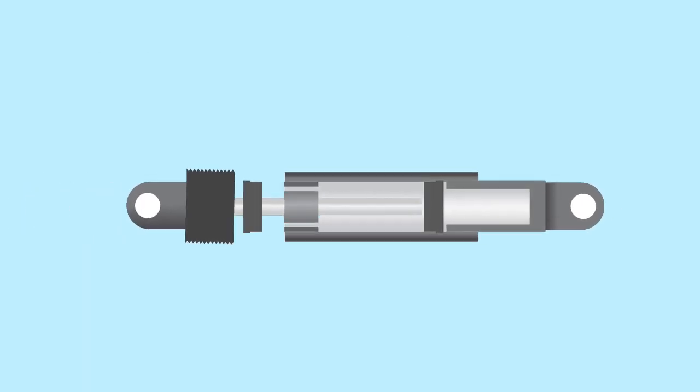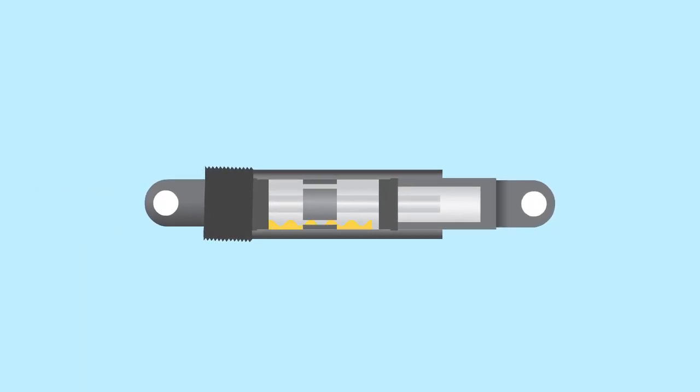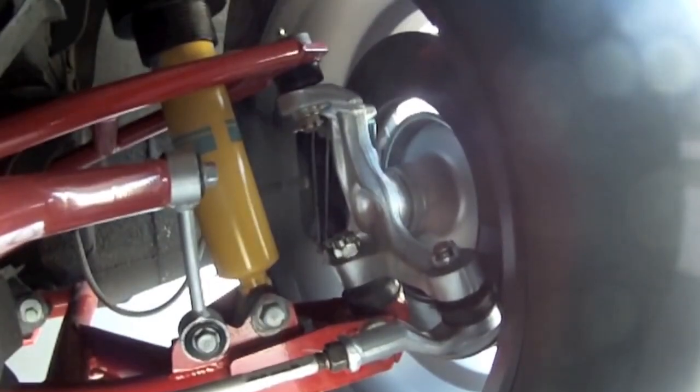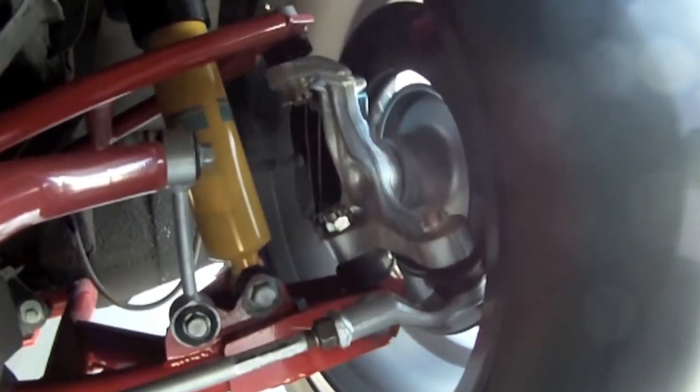A fluid viscous damper consists of a piston inside a pressurized cylinder with fluid that travels between two internal chambers. This works similar to how shock absorbers on your car operate.